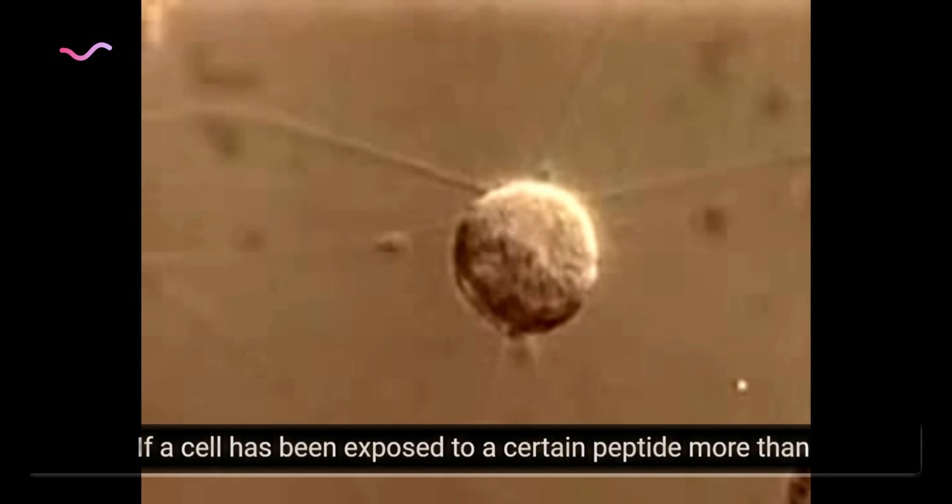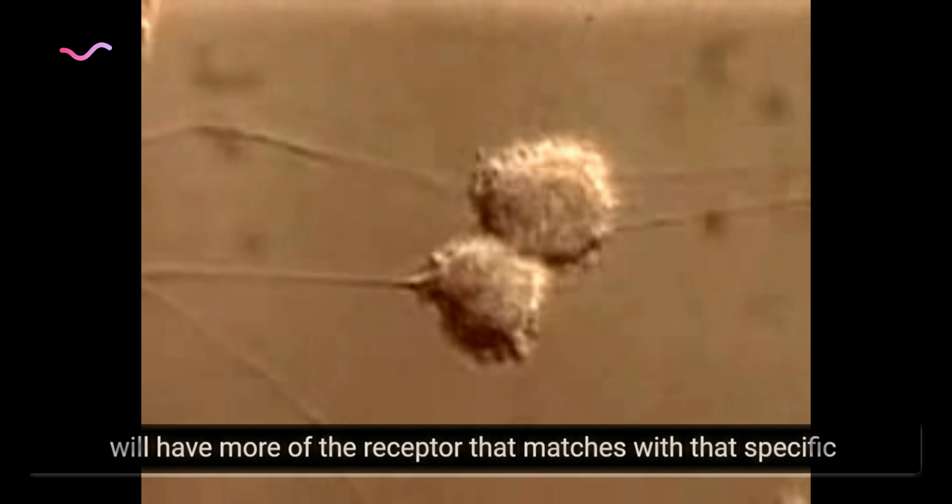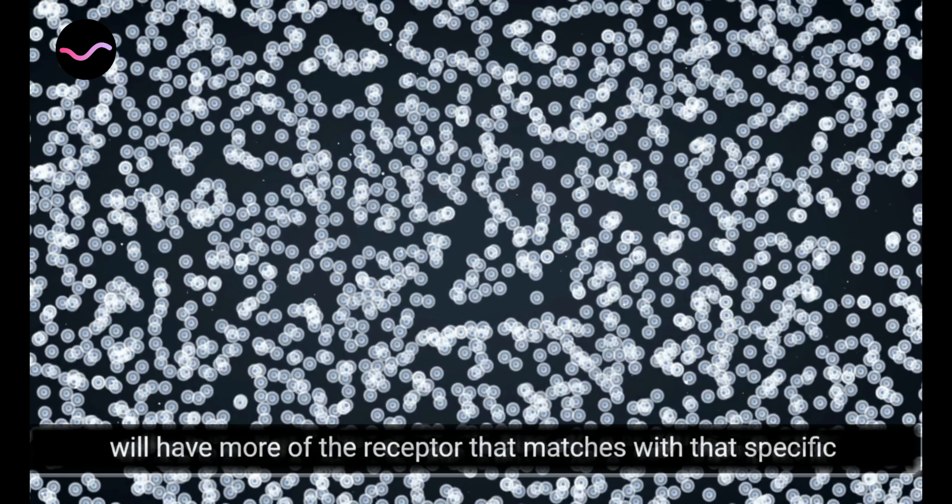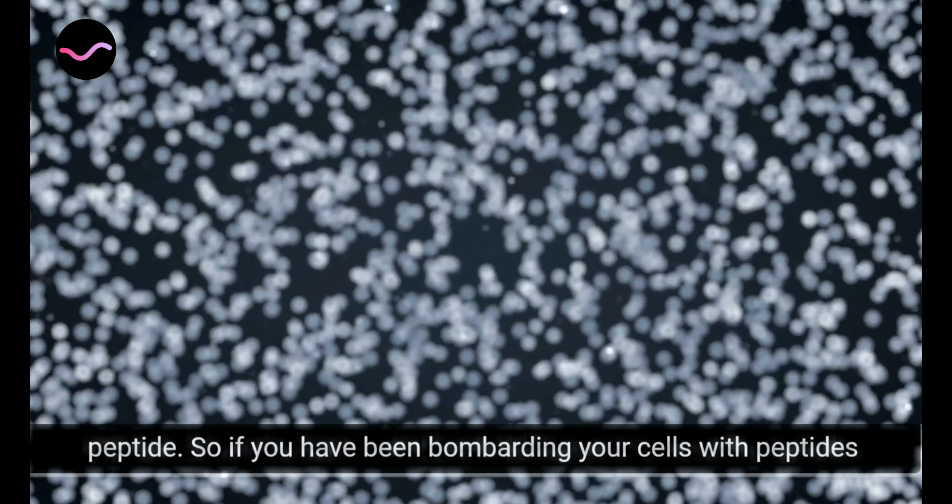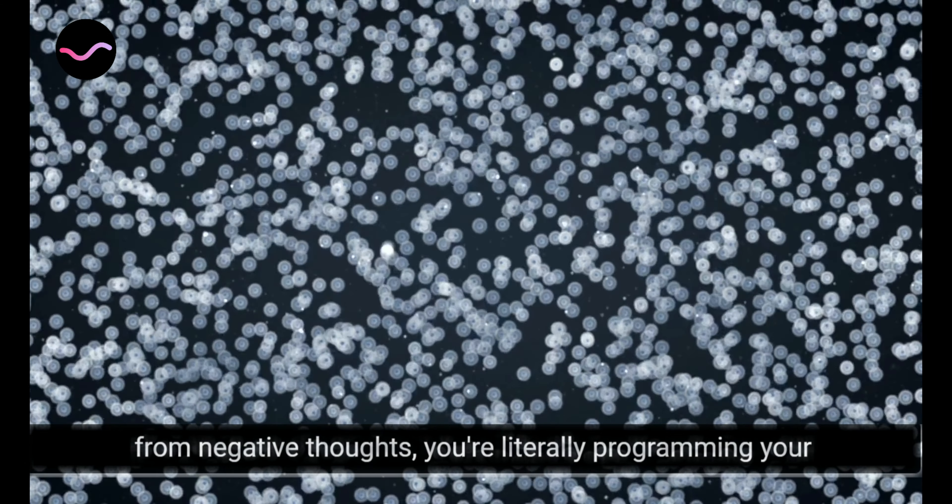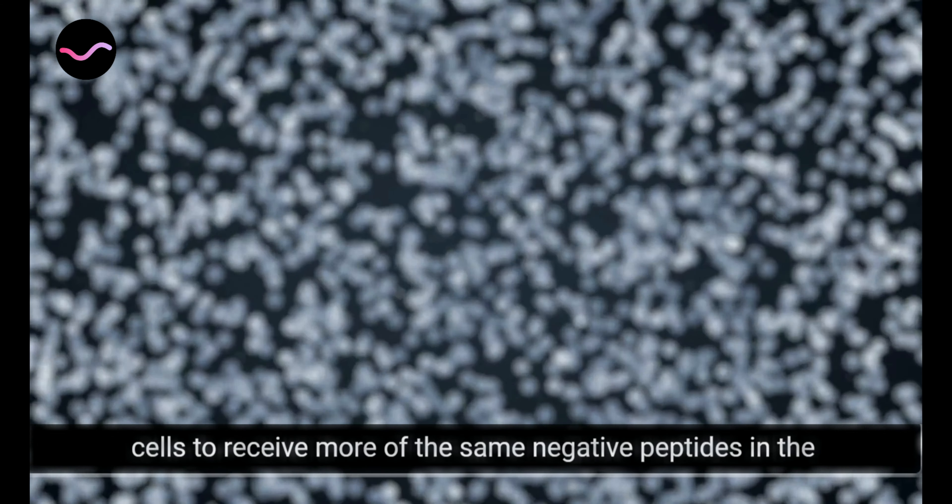Where this gets interesting is when the cells actually divide. If a cell has been exposed to a certain peptide more than others, the new cell produced through division will have more of the receptor that matches with that specific peptide. So if you have been bombarding your cells with peptides from negative thoughts, you are literally programming your cells to receive more of the same negative peptides in the future.